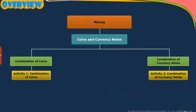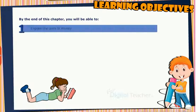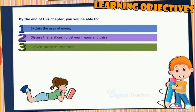This slide presents the overview of the chapter. Learning Objectives: By the end of this chapter, you will be able to explain the uses of money, discuss the relationship between rupee and paisa, and convert the notes into coins.